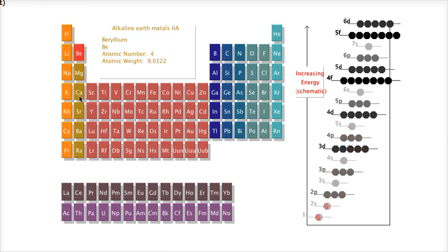For this group 2A, they have to lose two electrons. So for example, calcium, if it loses its 2 4s electrons, it'll have the electron configuration of argon, and so on and so forth.